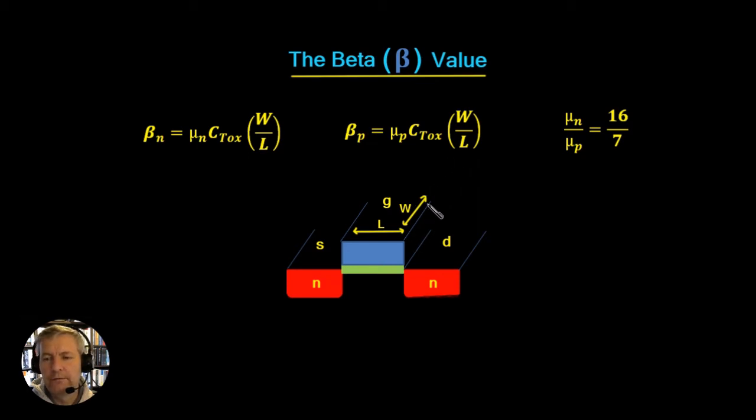So as a designer, we've got control over this width and the length, but these values, the C_ox and the μ_N, also the C_ox and the μ_P, these are defined by the process. The beta_N and beta_P are sometimes called the transistor gain factor. These are process-related values, so as a designer we don't have access to these. The only thing we have access to is the width and the length of our transistor.